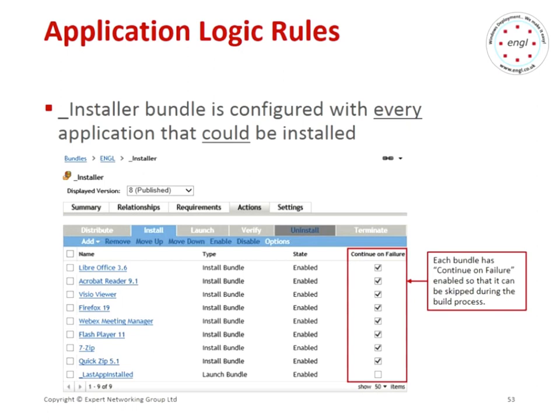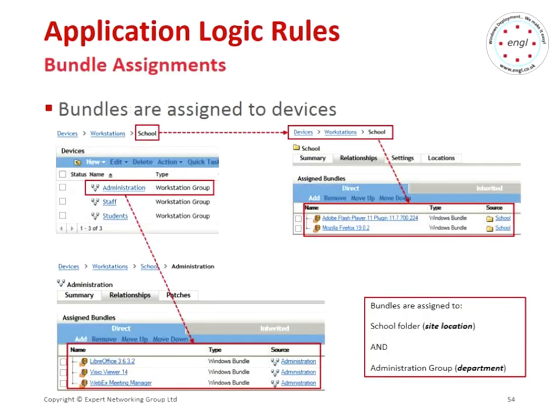If we don't tick continue on failure, VCM will detect that an action within the bundle has failed and will stop processing. So for logic rules, we need to make sure continue on failure is set. In the event log for each device, you'll see an information message saying a bundle was blocked — Novell records this as a third party verify event. We call it logic rules because that's what it means to us in the deployment process.